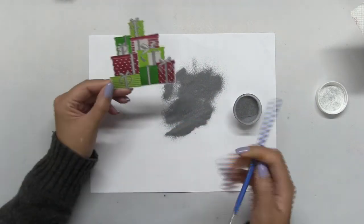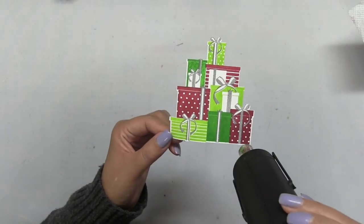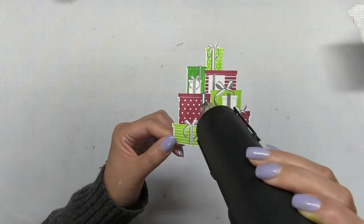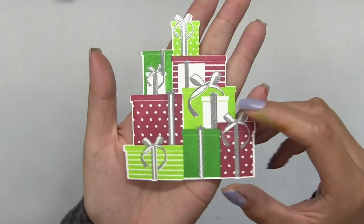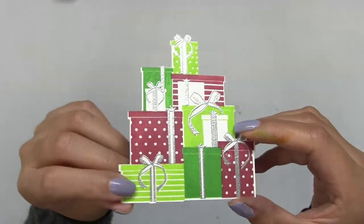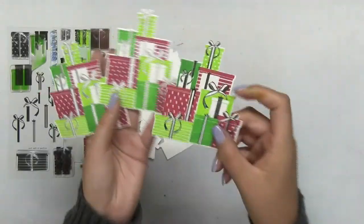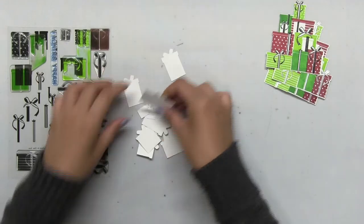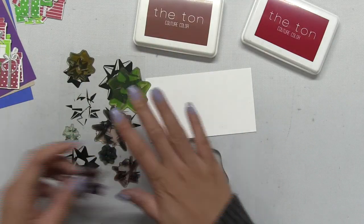If you have any stray embossing powders because some of the ink might still be wet, just use a tiny paint brush to get those strays off and you get this beautiful clean embossed image that's absolutely perfect for Christmas. You can experiment with different colors but I chose to go with traditional Christmas colors.